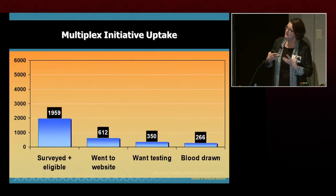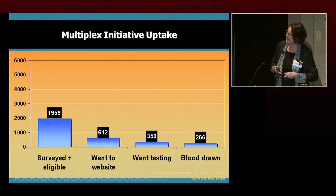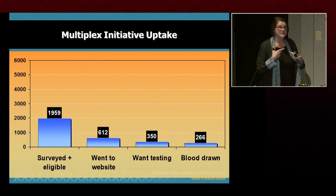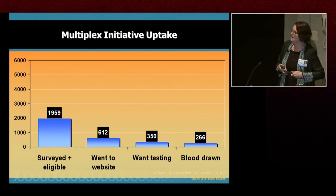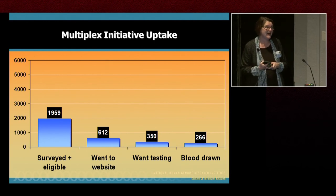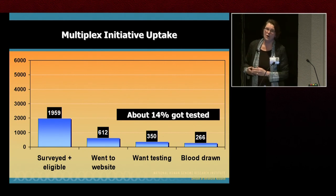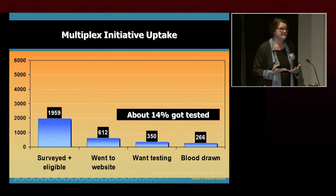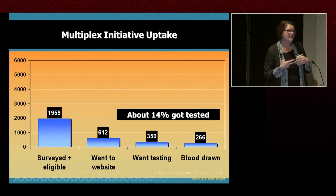We also tested the notion of the 'tsunami' — would so many people seek genetic testing that it would overwhelm the system? Of the 1,959 surveyed and eligible, only 612 went to the website even to consider testing. This was free testing — not replicable in the real world. Of those, about half wanted testing, and of that half, only slightly fewer actually showed up to have their blood drawn — about 90 fewer. Of the baseline population approached and offered testing, only 14% got tested. The notion that individuals would be very excited about getting low-probability genetic information may be inflated.